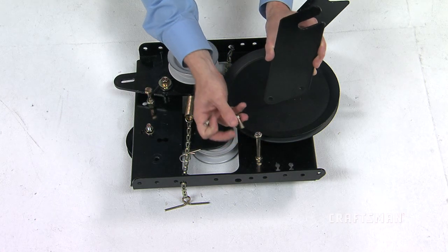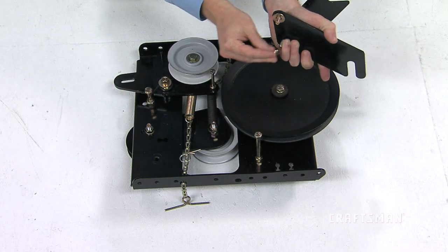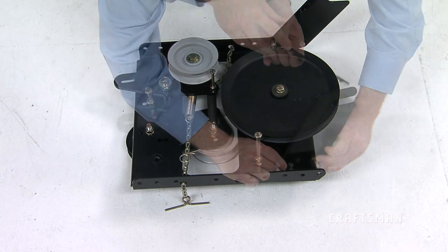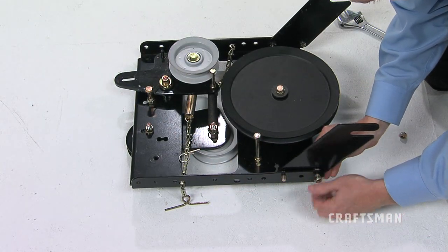Fasten them using two 5-16-inch by 3-4-inch hex bolts, part G, 5-16-inch washers, part V, and 5-16-inch nylock nuts, part HH.